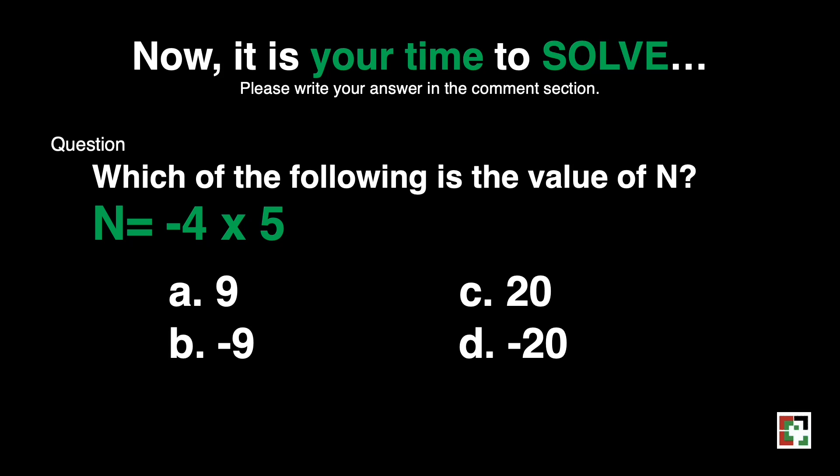Is it a nine, b negative nine, c twenty, and d negative twenty? I'll be waiting for your answer. Thank you.